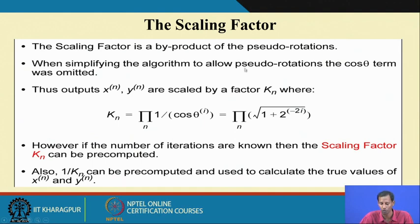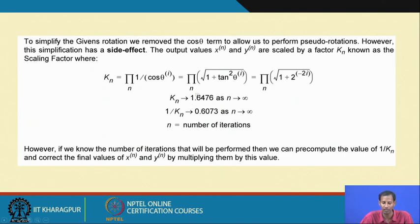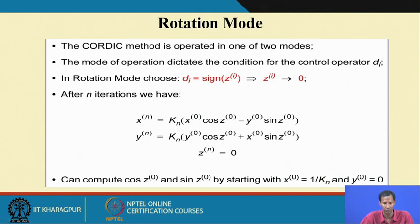This is the scaling factor introduced because of the pseudo rotation or the omitting of the cos theta term. To simplify the given rotation, we remove the cos theta terms to allow us to perform the pseudo rotation. However, this simplification has a side effect — the output values of X_n and Y_n are scaled by the factor. If we consider n up to infinity, the value K_n will be 1.6476, so 1 by K_n equals 0.6073. Considering this, we can run the CORDIC in 2 modes.